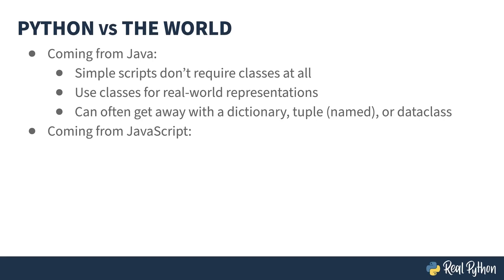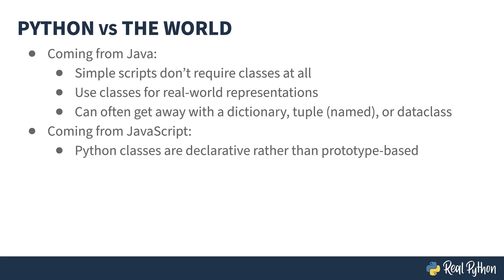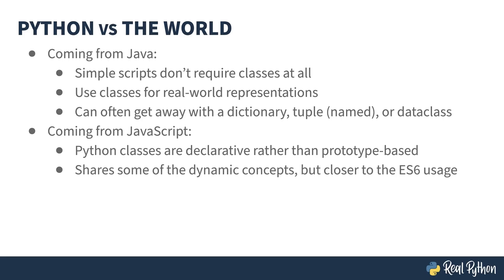If you're coming from JavaScript — welcome to a saner world. Classes in JavaScript are prototype-based; there are a couple of other languages that use this approach as well, but they're not as common. Python, like most other object-oriented languages, uses a structured declarative approach. If you're used to ES6-style JavaScript using the class keyword, you won't notice much difference syntactically, but the underlying mechanics of inheritance are different, so you might need to be careful as you dig in. And since JavaScript was also originally a procedural language with object-oriented semantics layered on top, the easy mixing in Python will be familiar to you.